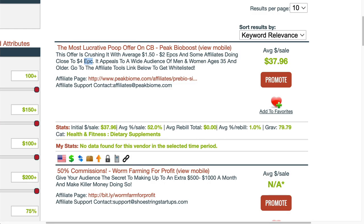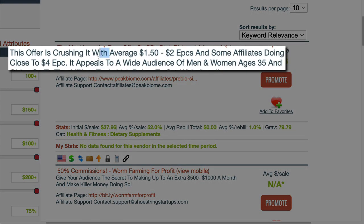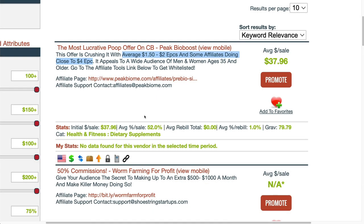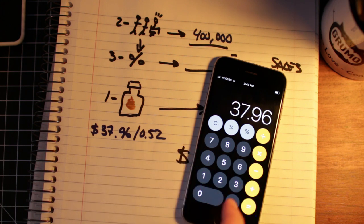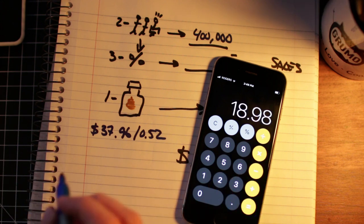You can get it from this thing called EPC, which here it says it's ranging from $1 up to $4. The EPC stands for Earnings Per Click. The great thing about this number is that if we divide the average earnings per sale by, let's say, a conservative EPC of $2, we get the number of clicks required on average to produce one sale.